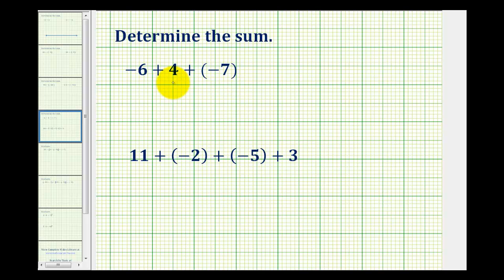So for negative six plus positive four plus negative seven, we'll first determine the sum of negative six and positive four.